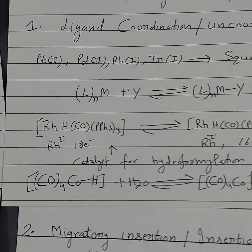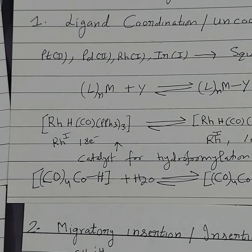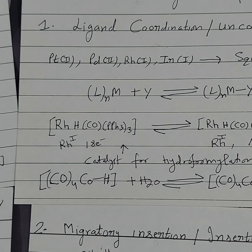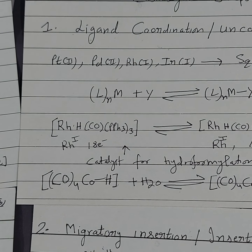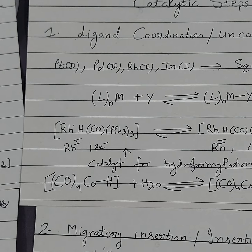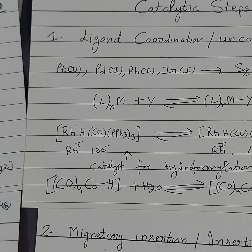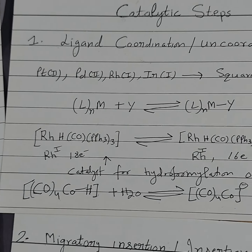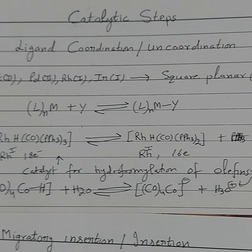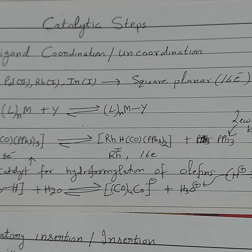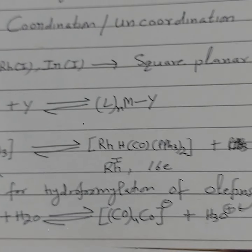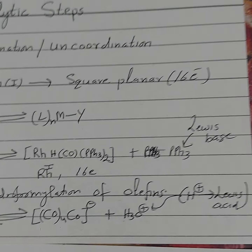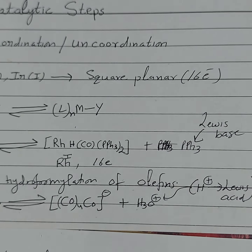But when we use a pro-catalyst of these metals — like the rhodium hydride carbonyl phosphine complex Rh(H)(CO)(PPh3)3, which is an 18-electron system — this is not a catalyst; it is a pro-catalyst for hydroformylation of alkenes. It undergoes uncoordination: the bulky ligand PPh3 uncoordinates from the pro-catalyst to produce a catalyst that is a 16-electron system. This uncoordinated ligand acts as a Lewis base.